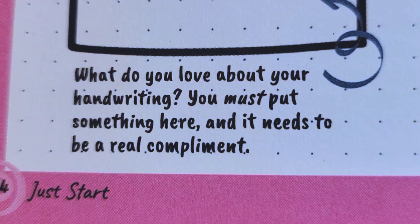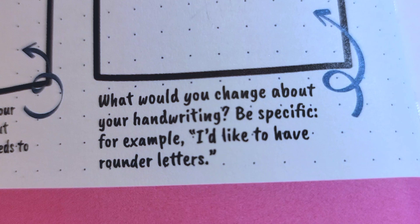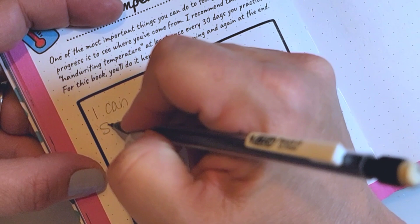We're going to start out by taking our handwriting temperature like Cindy recommends. So we have to come up with two things. The first thing is something you love about your handwriting and you have to answer this. And the second thing is a specific thing you'd like to change about your handwriting.